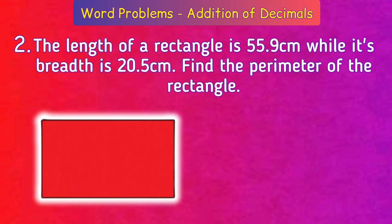Problem number two: The length of a rectangle is 55.9 centimeters while its breadth is 20.5 centimeters. Find the perimeter of the rectangle.